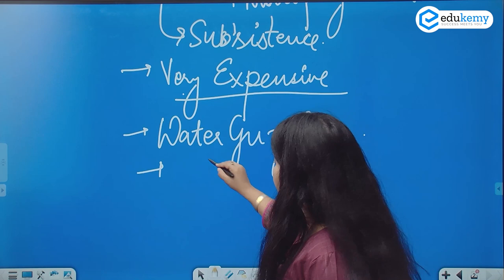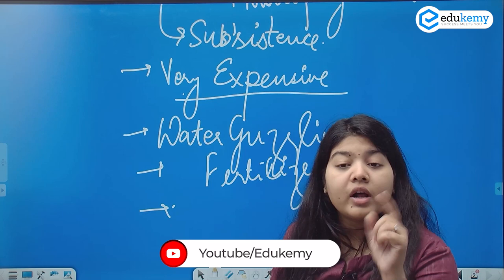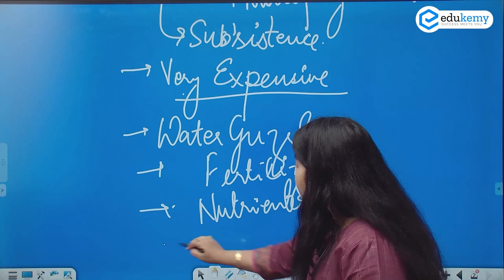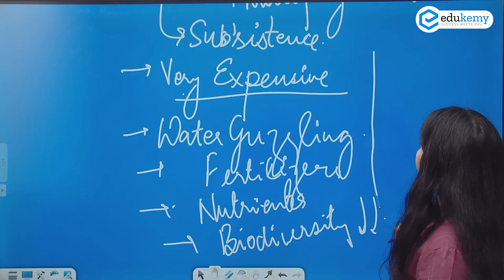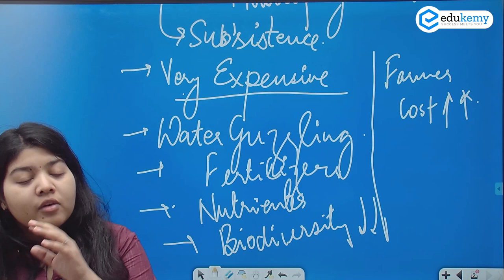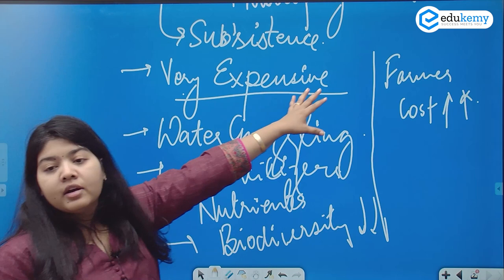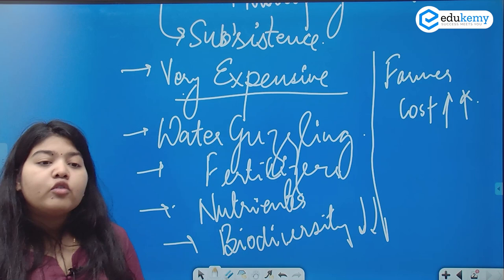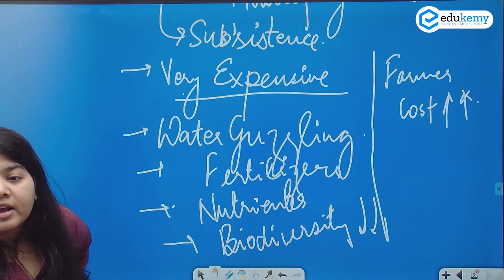GM crops need higher fertilizers. Monoculture leads to depleting soil nutrients — the overall biodiversity of the soil will be low. The farmer's cost will be very high. Rich farmers will benefit but poor farmers will be trapped in a debt cycle, leading to farmer distress. This is also a problem with HYV seeds.